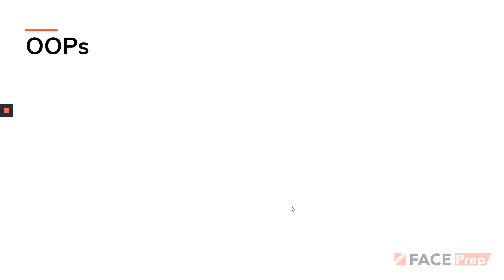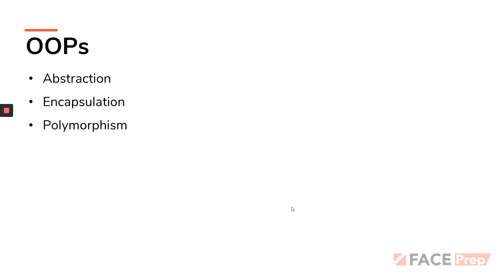When it comes to OOP concepts, OOP basically stands for object-oriented programming. There are a lot of concepts hidden inside this object-oriented system. There are four main important things: the first one is abstraction, the second is encapsulation, the third is polymorphism, and the last one is inheritance. You might find other things like overloading if you Google it, but these are the main ones. We will deal with all four one by one.